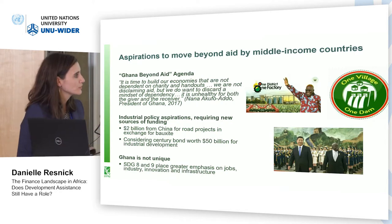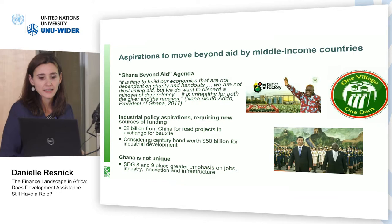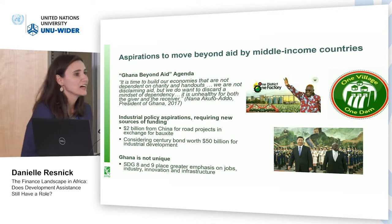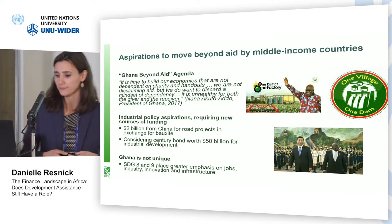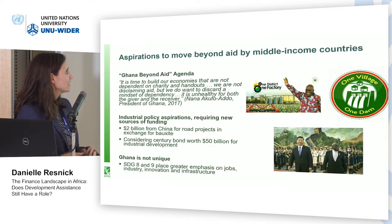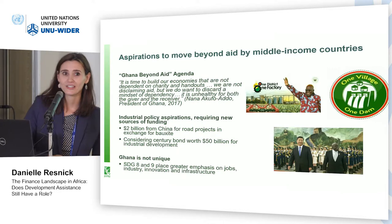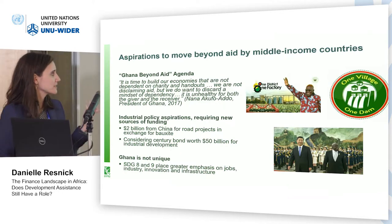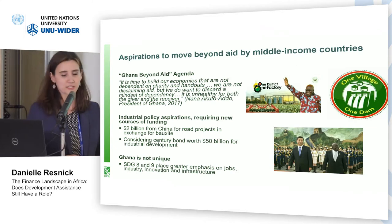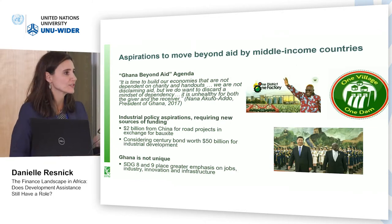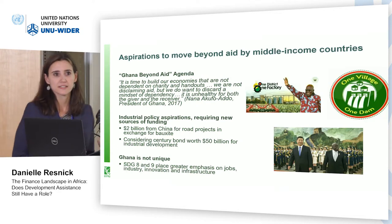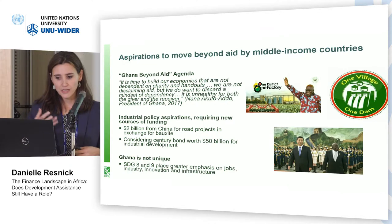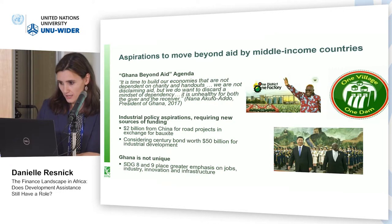China has been a huge source of this funding. Ghana is trying to get $2 billion from China for road projects in exchange for bauxite deposits, and it's considering launching a century bond worth over $50 billion for industrial development, following Argentina's lead. We're seeing this in Senegal and Zambia as well. This is very much influenced by SDGs eight and nine, which emphasize jobs, infrastructure, and innovation — and that involves a different type of finance than we've traditionally seen from the DAC donors.